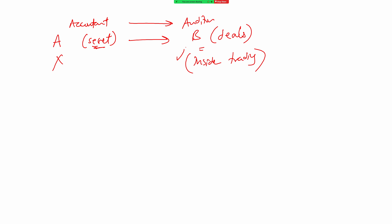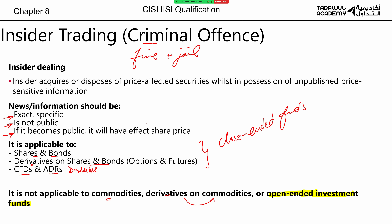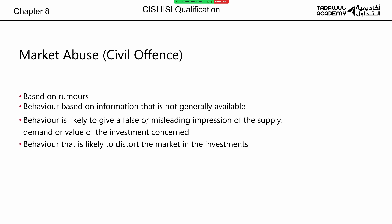On the portal, this scenario is referred to as Tom and Harry. It's a very famous and tricky question. Every bank the instructors visit gets this Tom and Harry question and every employee gets it wrong. Many of the questions on the portal come directly from student feedback. Moving on — market abuse is a civil offense, meaning a fine only.